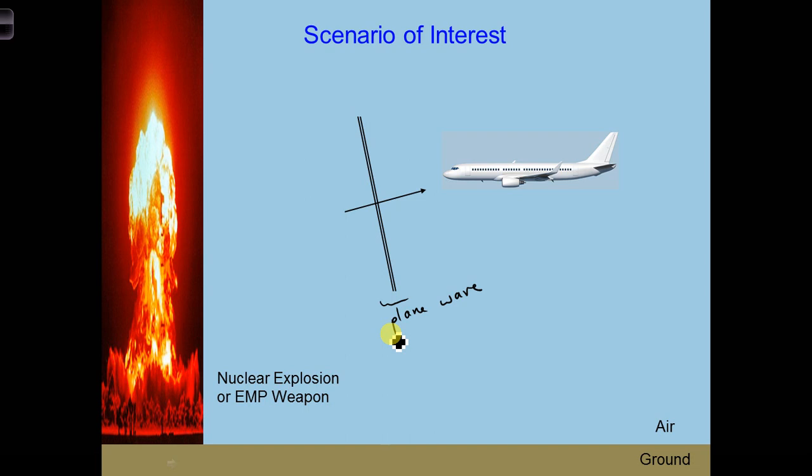Go ahead and take out your in-class project notebooks and spend a couple minutes and describe the E1, E2, and E3 components and which one we're interested in and why, and to also describe that we're going to consider the incident EMP on the airplane as a plane wave and why we can make that assumption.